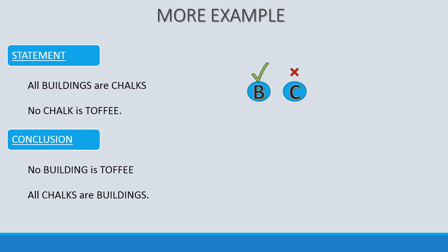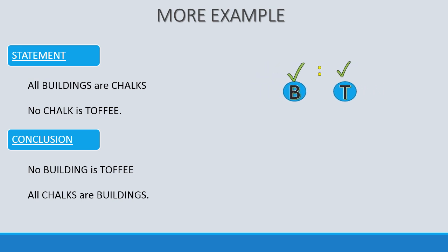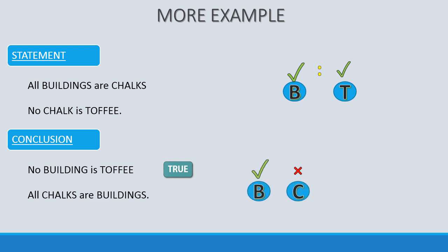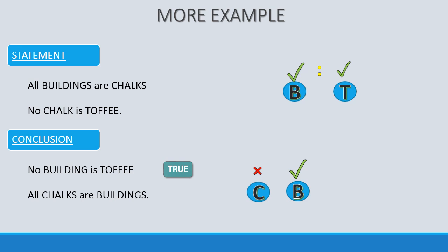For the statement 'No chalk is toffee', the symbol will be a tick mark over both C and T with a colon in between, as it is a negative sentence. We have a common element C, and one of them has a tick mark, so it can be replaced by C-cross. The conclusion becomes a tick over both B and T with a colon in between — that is the symbol of 'No building is toffee', so the first conclusion is true. For the second conclusion, reversing the first statement symbol does not give a standard symbol, but replacing B-tick with B-cross gives C-cross, B-cross, meaning 'Some chalks are buildings' — so the second conclusion is false.